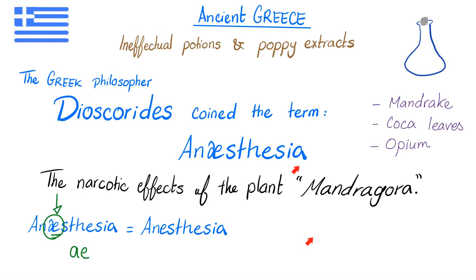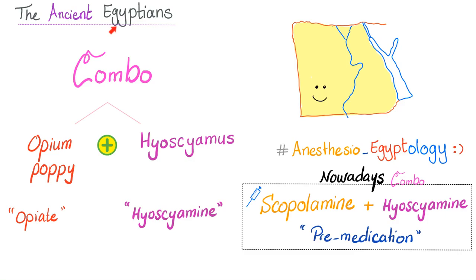Let's leave Greece and go to ancient Egypt, my home country. Ancient Egyptians used a combo of opium poppy and hyoscyamus. Translation: opium poppy is an opiate, aka morphine, and hyoscyamus is hyoscyamine. Nowadays we use scopolamine and hyoscyamine as a combination for pre-medication to prepare the patient for anesthesia before surgery.